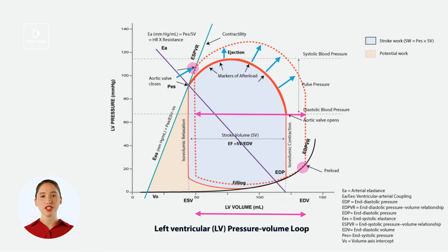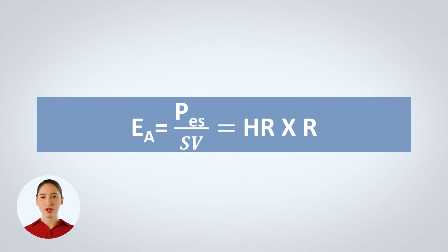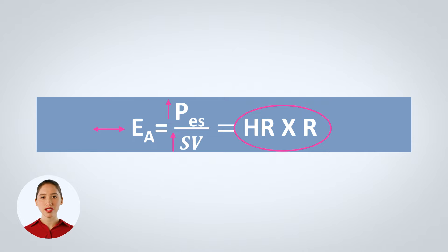If we draw the elastance line for the new loop, you will see that it goes parallel to the line of the initial arterial elastance line. With increased preload, there is an increase in stroke volume associated with an increase in end systolic pressure, keeping a constant elastance. Going back to the formula, you can see how elastance remains the same as a result of increased stroke volume and increased end systolic pressure at the same time. The heart rate and resistance remain constant on the right side of the equation.